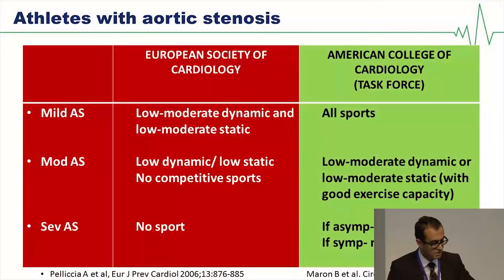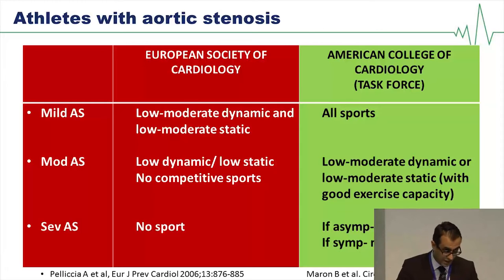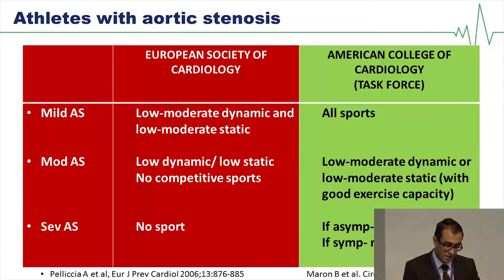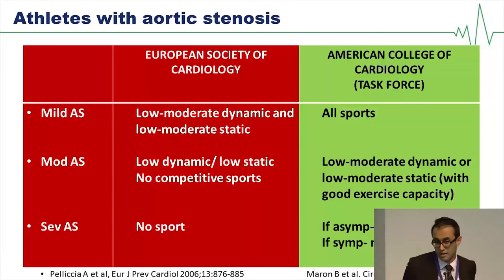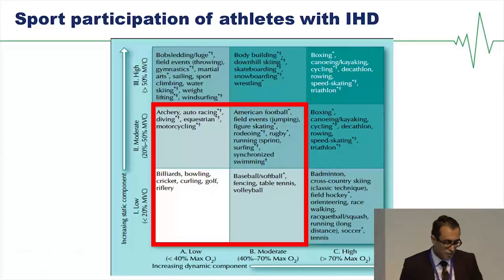Regarding aortic stenosis, Europeans are slightly more conservative than their American counterparts. For mild aortic stenosis, low-to-moderate dynamic and low-to-moderate static sports are advised by the ESC, whereas the Americans allow any sport. For moderate aortic stenosis, the ESC allows low dynamic with no static competitive sports, whereas the Americans allow it provided good exercise capacity is demonstrated on functional testing — such as an exercise test — with no ST depression and no symptoms. Severe aortic stenosis is a no-go for the Europeans, but the Americans allow low-intensity sports if asymptomatic, and advise against sport only if symptomatic.